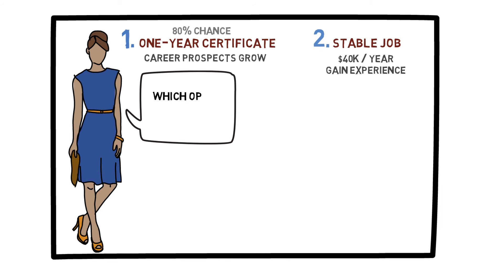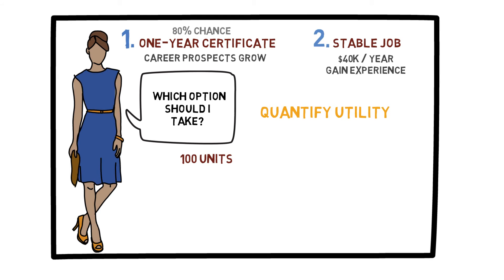So you have to ask yourself which option you should take. The idea here is to quantify the utility of each option. Suppose one year from now you have passed the exam and have the certificate — say you assign to this outcome 100 units of utility. Remember that this number is completely arbitrary because we are only using it to compare things. This value represents the knowledge, career advancement, etc. you receive from earning this certificate. When you study for the certificate, you are potentially gaining two benefits: first, the knowledge you have gained by studying for the exam, and second, the certificate itself.